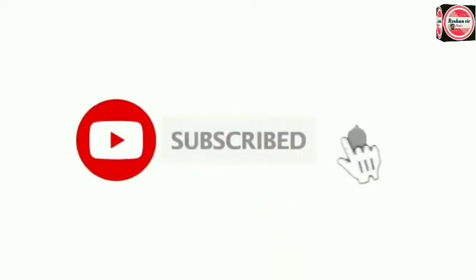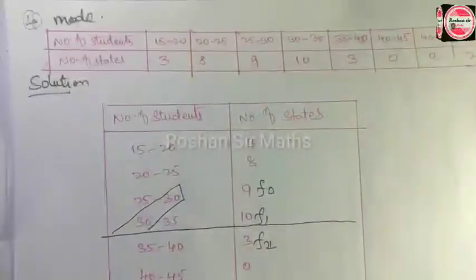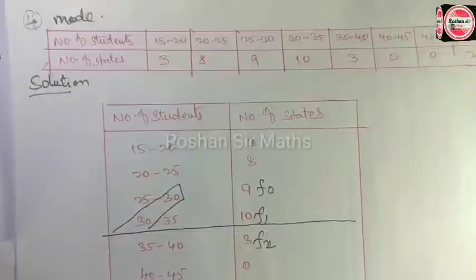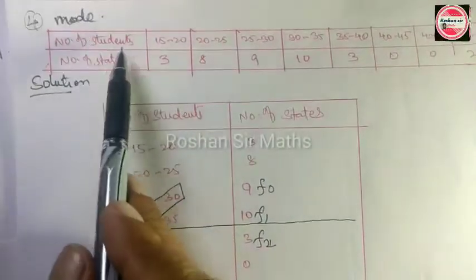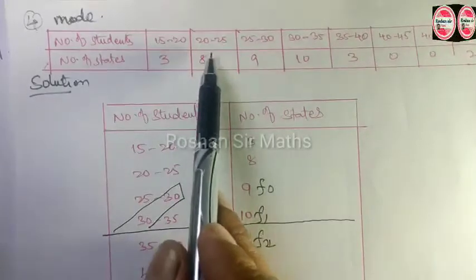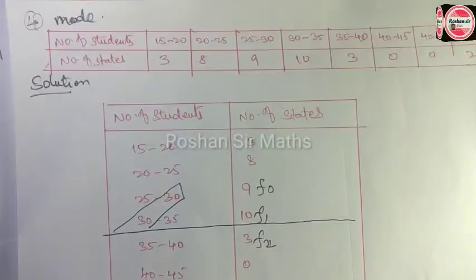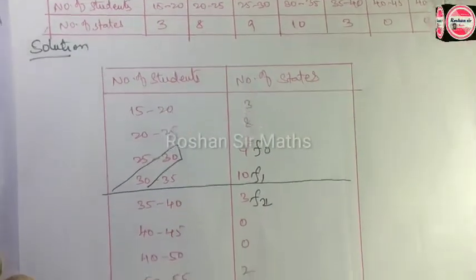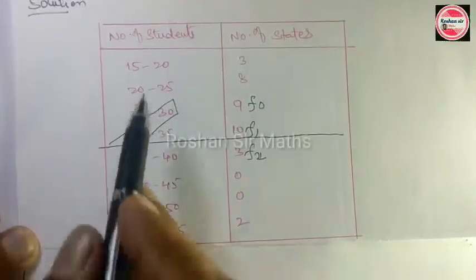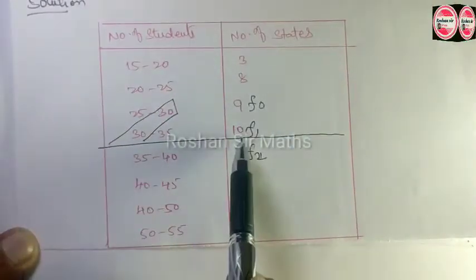Hello students, welcome to my channel. This is Roshan sir. Exercise 4.2, question number 4 - find the mode. Number of students and number of states are given. हम इसको mode करेंगे। Already हम first question कर चुके हैं। उसके लिए हम इस तरह का एक box लेंगे - यह number of students, number of states का box है।